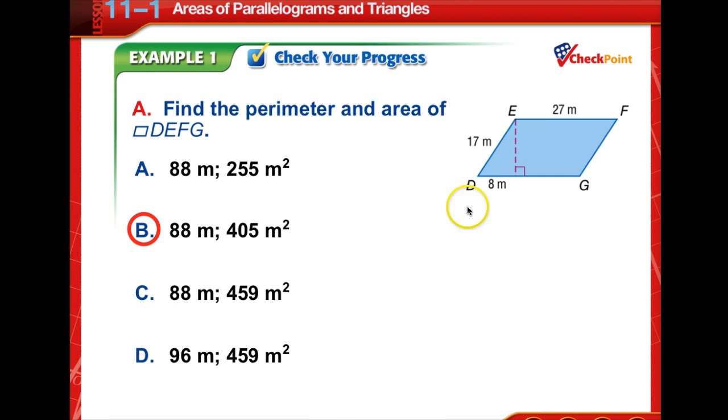Well, we know the perimeter, if this side is 17, so is this one. And if this side is 27, this entire length of segment DG is also 27. Add those together, you get 88 meters. Use the Pythagorean theorem. 8 squared plus B squared is equal to 17 squared. And solve for B, and you get 15. Now the area is the base of 27 times that height that you found of 15, which is 405 meters squared.